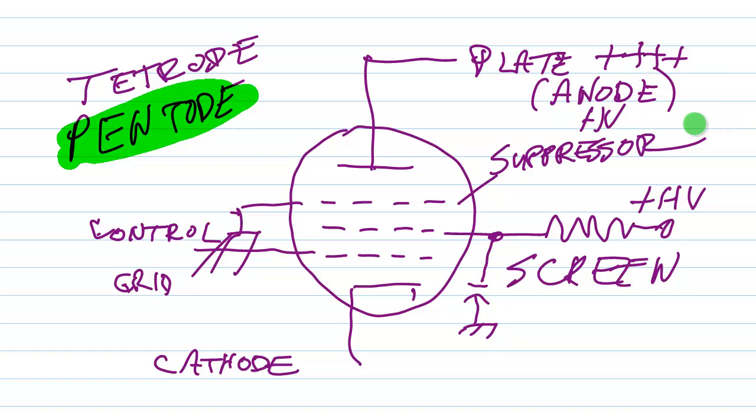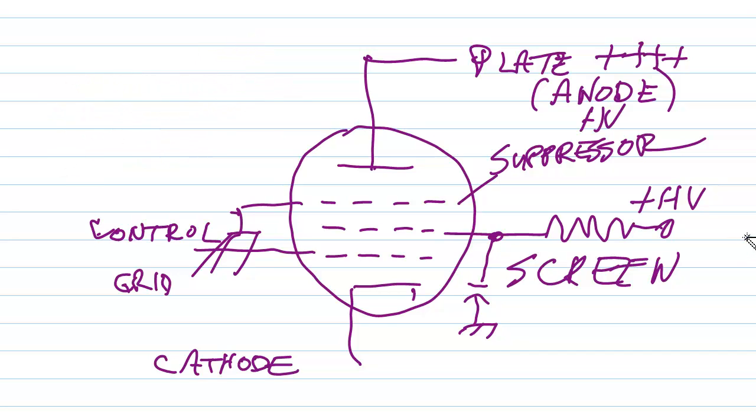The tetrode and the pentode are commonly used in radio frequency power amplifiers because they tend to be somewhat more stable, that is they're less likely to break into parasitic oscillation than the triode is.